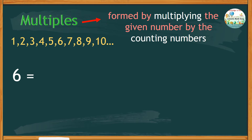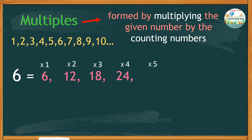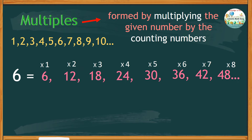Starting with 6 times 1 equals 6, 6 times 2 equals 12, 6 times 3 equals 18, 6 times 4 equals 24, 6 times 5 equals 30, 6 times 6 equals 36, 6 times 7 equals 42, 6 times 8 equals 48, and so on. Another way to find the multiples of a number is by repeated addition.